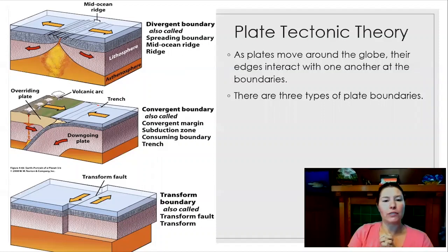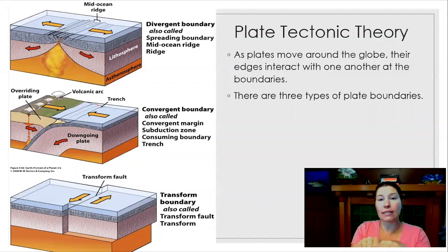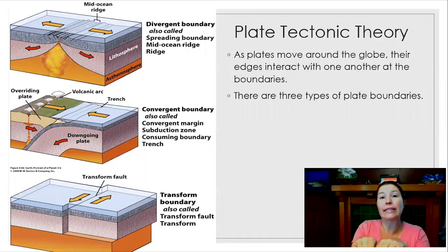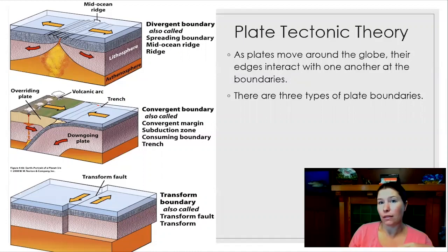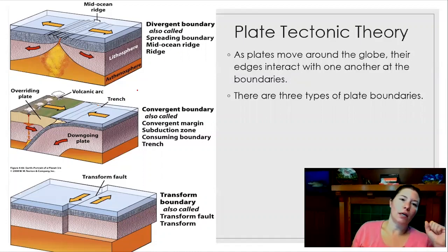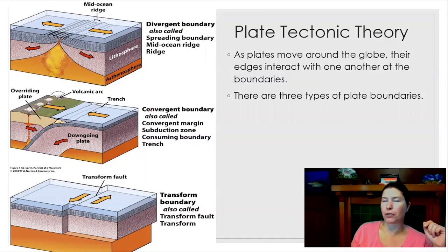Transform plate boundaries are where crust is neither created nor destroyed—plates just move past one another, releasing stress from surrounding convergent or divergent action. When they occur on land, that's where we can have big earthquakes. All three boundary types create earthquakes, but really only divergent and convergent boundaries create volcanoes—and not always the volcanoes we typically think of.